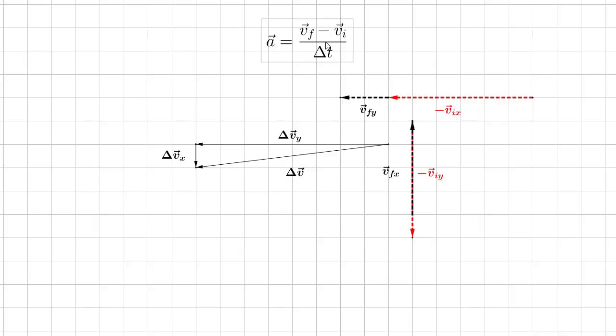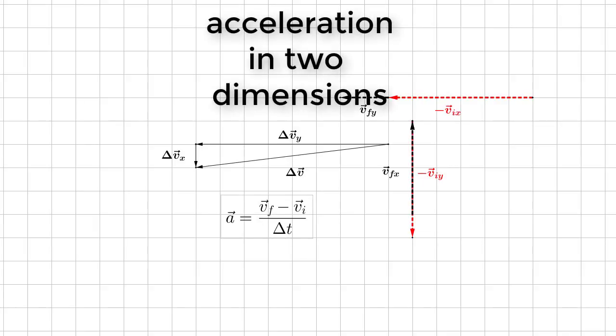Once you're in the position of knowing what your delta V is—both its magnitude and direction—you're ready to finish the calculation by dividing by delta T.